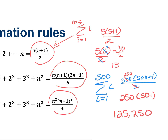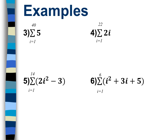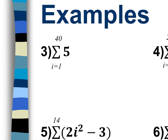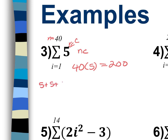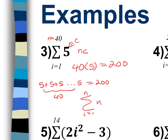Let's try examples using the properties and rules. First, sigma of a constant 5 from i=1 to 40: using the nc property, that's 40×5=200. This means we're adding 5 forty times, and the sum equals 200.